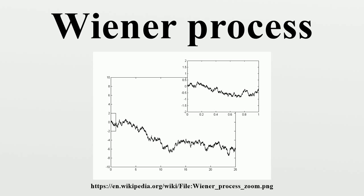Wiener also gave a representation of a Brownian path in terms of a random Fourier series. For independent Gaussian variables with mean zero and variance one, the resulting series represents a Brownian motion. The scaled process is a Brownian motion on the given interval.